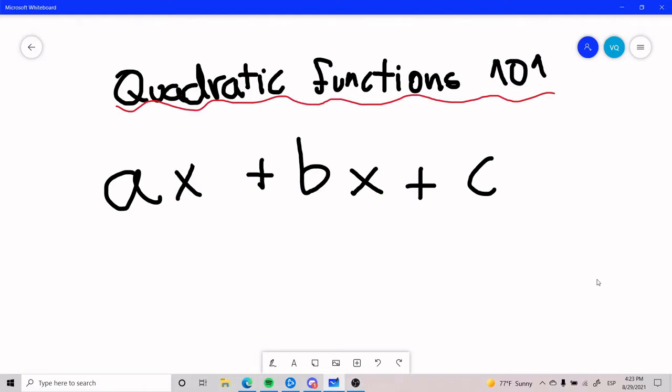Hello everybody, and welcome to my quadratic functions video 101. A quadratic function usually has this form here: ax squared plus bx plus c. The most noticeable or important detail is that we have an x squared somewhere in between. This usually is also expressed with f(x) in front of it.